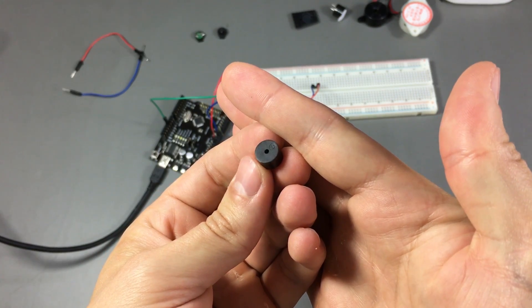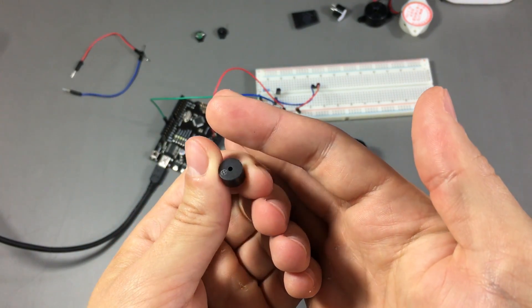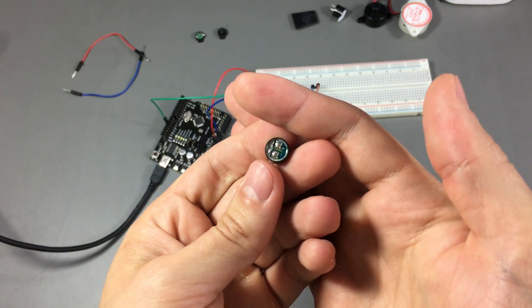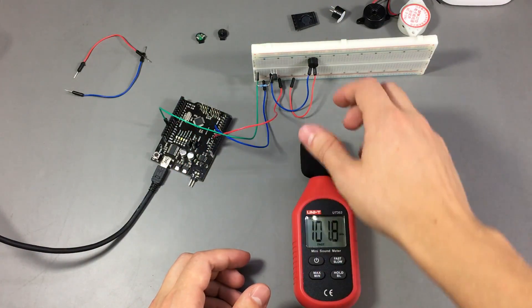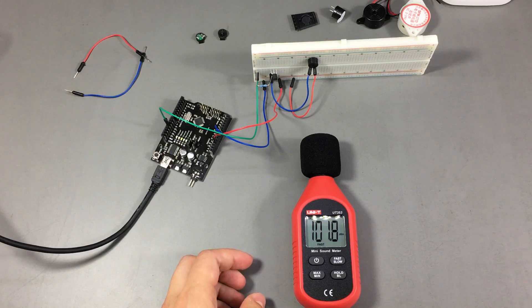This is our third buzzer. No markings on this one, but I do have its part number. I'm going to position the breadboard like this so that it points directly into the microphone.